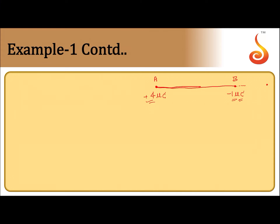The null point will be somewhere beyond B. Let us say this point is P. P is the null point, located at a distance x from charge B, and the distance between A and B is given as 1 meter. At point P, the field due to charge A (positive) should be towards the right, and the field due to charge B should be towards the left. These two fields should be equal and opposite for the net field to be zero at point P.